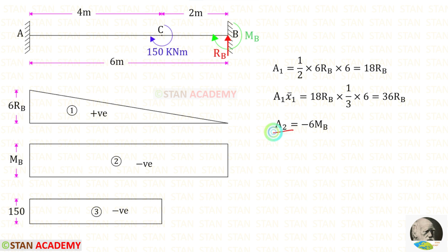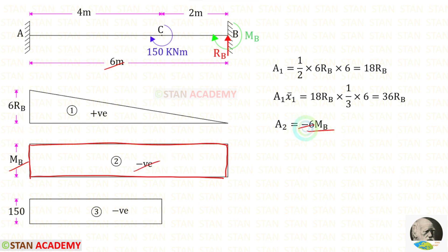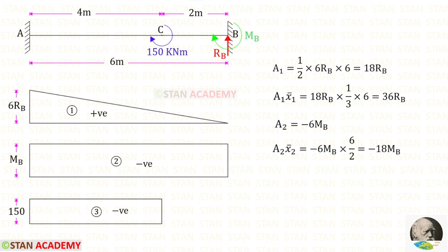Now let us find Area 2. It is a rectangle, so we multiply the length 6 by Mb to get the area. Since the diagram is negative, we apply a negative sign. For the centroid distance x̄₂, in a rectangle the centroid lies at the center, so the distance is 6/2 = 3. Therefore Area 2 × x̄₂ = −6Mb × 3 = −18Mb.